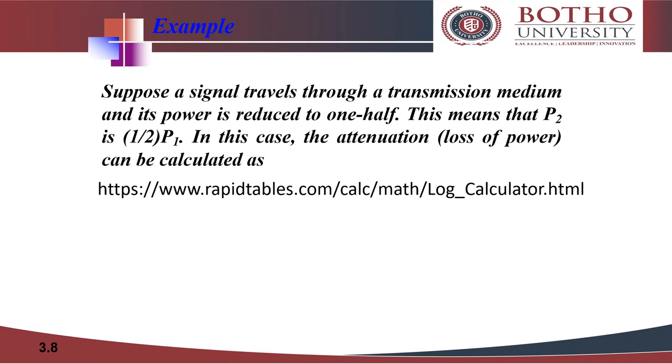Now let us consider an example and let's see how loss of power is calculated. The scenario goes like this: suppose a signal travels through a transmission media and its power is reduced to one half. This means that P2 is half of P1. In this case, the attenuation or loss of power can be calculated.